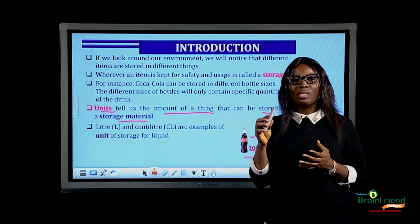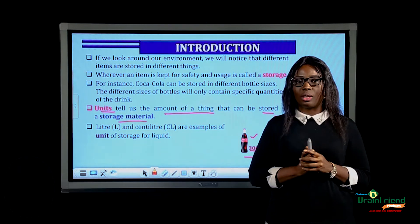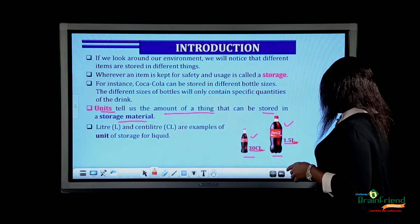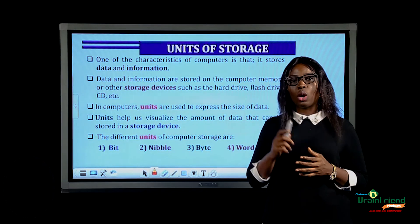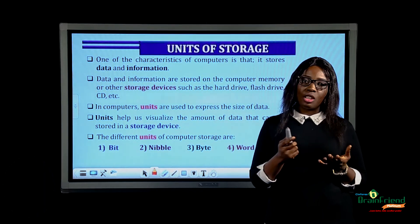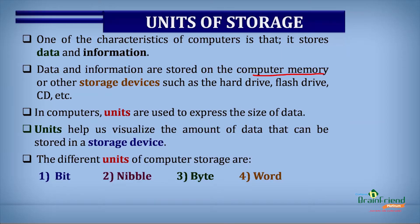Units help us to know the amount of a thing that can be stored in a storage material, so the unit of any storage material tells us the quantity of the item it can contain. So when it comes to the computer, what does it store data and information as? Data is stored on the computer memory and other storage devices such as CDs, hard drives, and flash drives. The units express the size of data and help us visualize the amount of data that can be stored in any storage device.